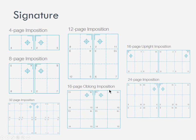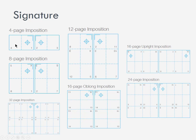I'd recommend grabbing a piece of newspaper and folding it up to see what kinds of signatures you can make. There's a diagram on the next page with instructions. Looking at the four-page signature on the left — which may be fresher in your memory from our project — page 1 and page 2 are on entirely different sides of the sheet. Pages 2 and 3 are right next to each other, forming the inside of the booklet, while the other side has the front and back cover.